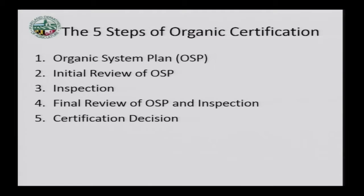I'm Bill Rawlings, administrator of the organic program. There are five steps to organic certification. First is the organic system plan, which is what we'll talk about most today because that's your plan on how to implement or run your organic farm. Next would be the initial review, the inspection, the final review, where we review the OSP and the inspection report, and then the certification decision.